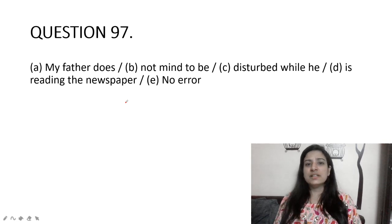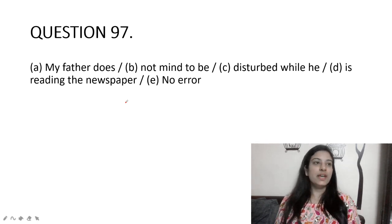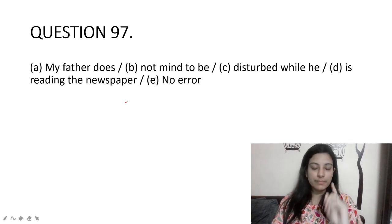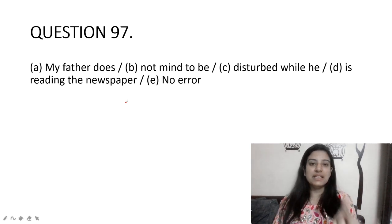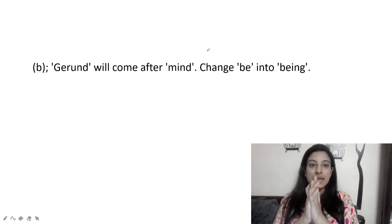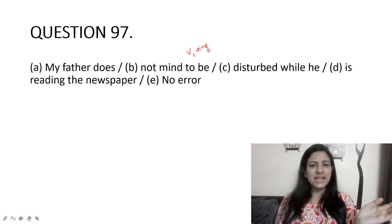My father does not mind to be disturbed while he is reading the newspaper. There are words in English after which you do not use an infinitive but V1+ing, and 'mind' is one of them. So option B — 'mind to be' — is wrong; it should be 'mind being.' The correct sentence: 'My father does not mind being disturbed.'